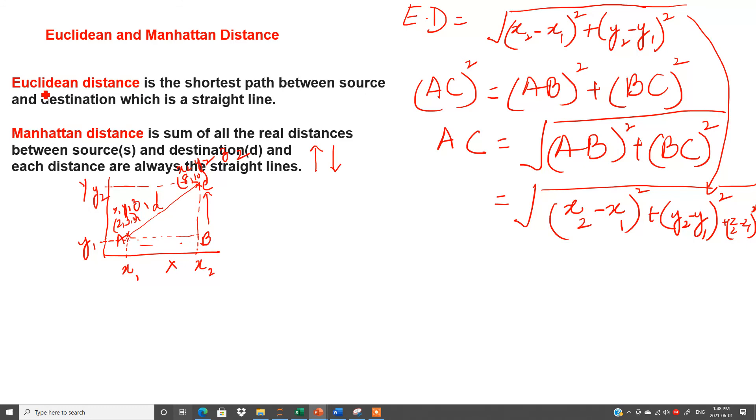Now I can read this that Euclidean distance is the shortest path between source and destination. See, this is the shortest path from source. This is source and this destination, which is a straight line. I hope the concept of Euclidean distance is clear and I have also proved it with the help of Pythagoras theorem.